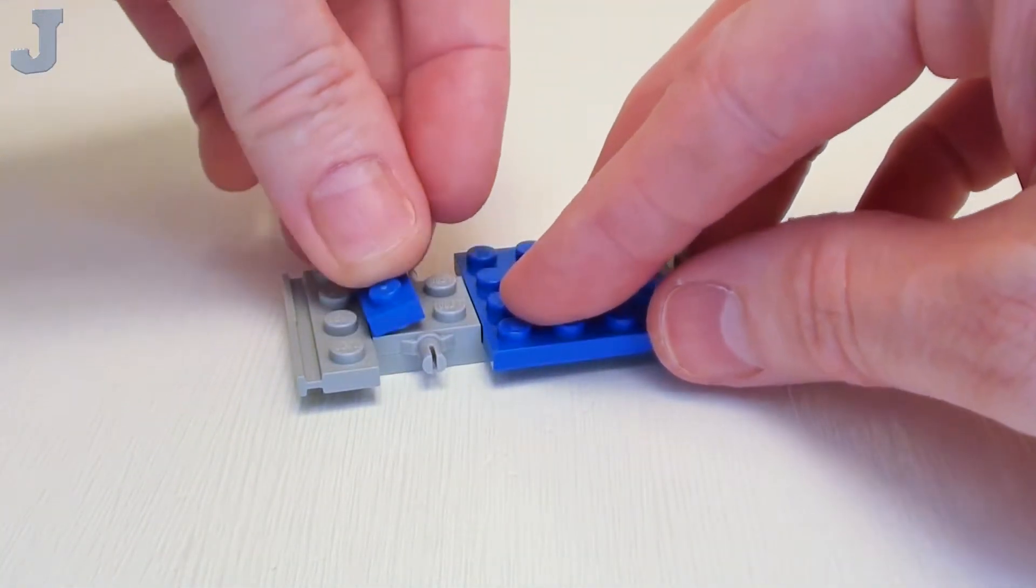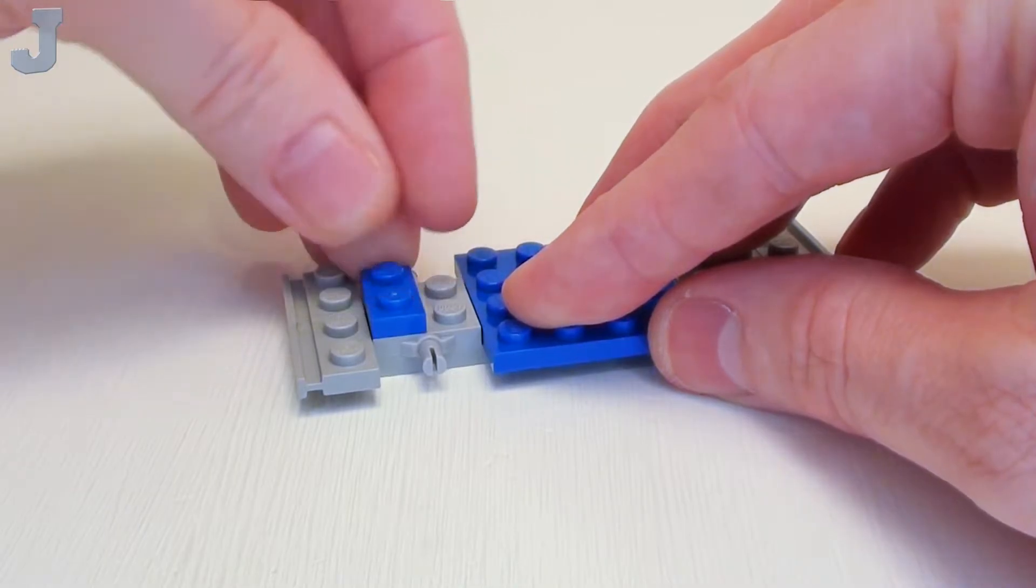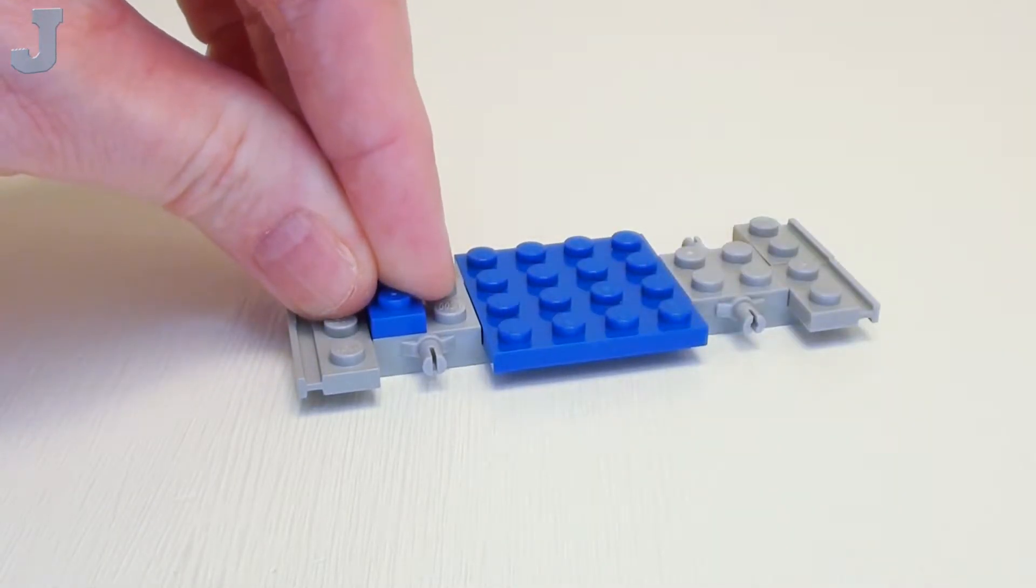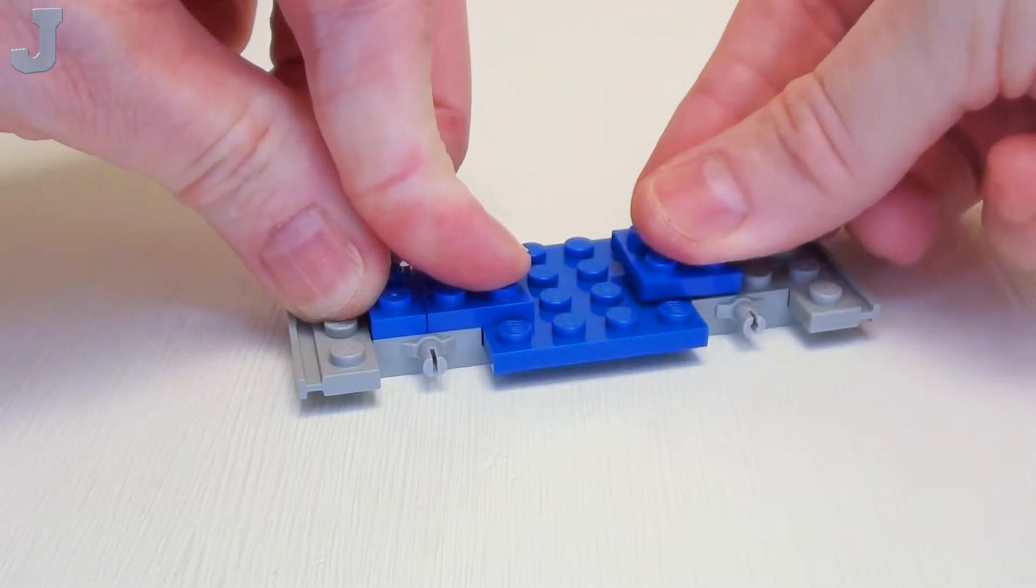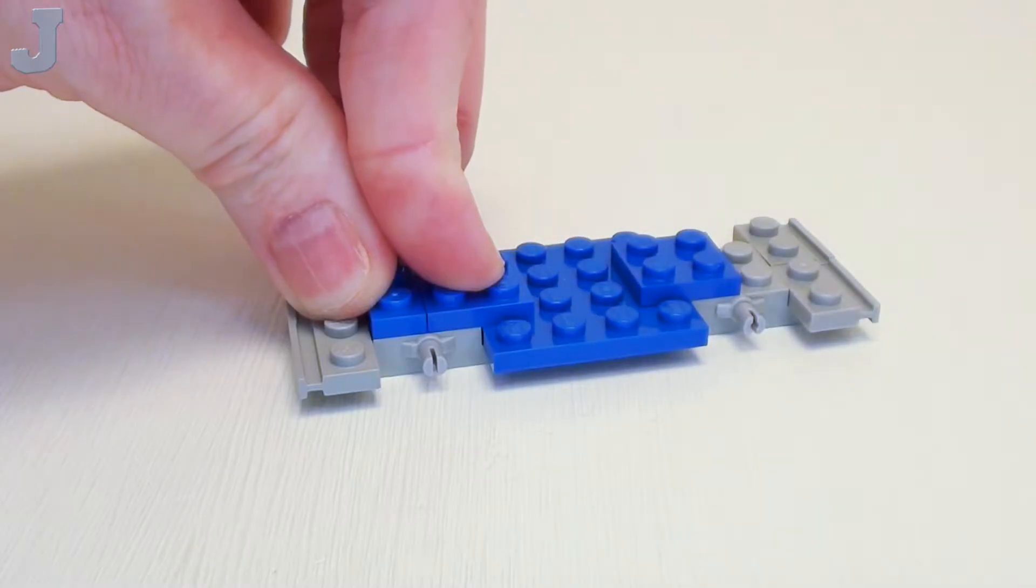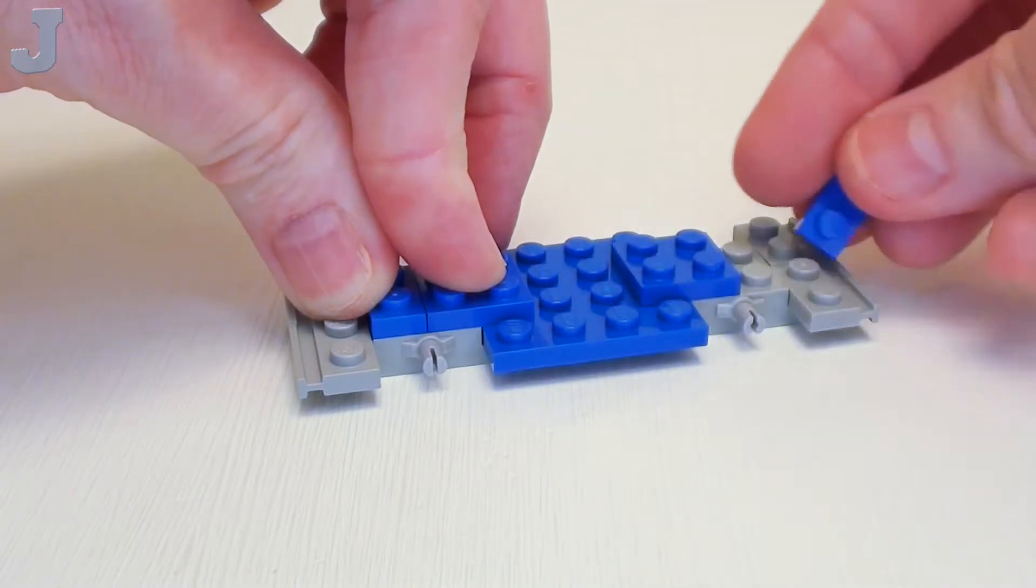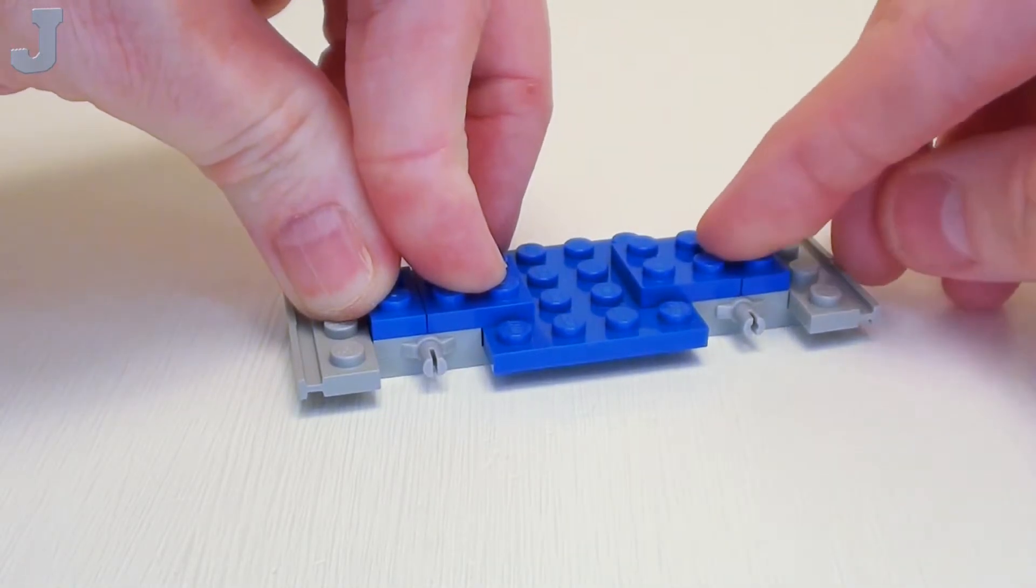Back on the left, I'm going to place a 1 by 2 plate right next to our 1 by 2 plates with slide. Then I'm going to proceed with a pair of 2 by 2 plates. Just be sure to leave a 2 by 2 opening. This is going to be where a minifigure is going to sit, and a 1 by 2 plate right here.